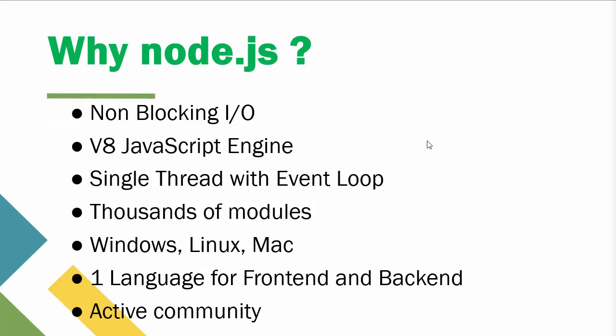Node.js uses non-blocking IO. In most software systems, when you make a system call — for example accessing a file on disk or querying a database — those calls are blocking, meaning program execution stops and waits for the call to finish. Node takes a very different approach by serving all requests from a single thread. The code on this thread is still executed synchronously, but every time a system call takes place it is delegated to the event loop.